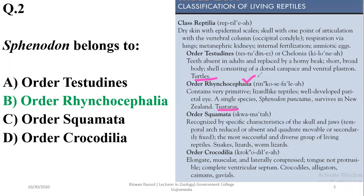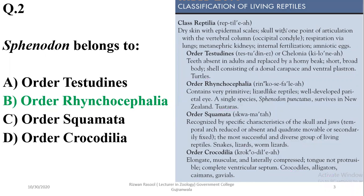Tuataras are Rhynchocephalians, while Squamata includes snakes, lizards, and worm lizards. These are the four living orders of reptiles. Crocodiles, alligators, caimans, and gharials belong to the order Crocodilia.